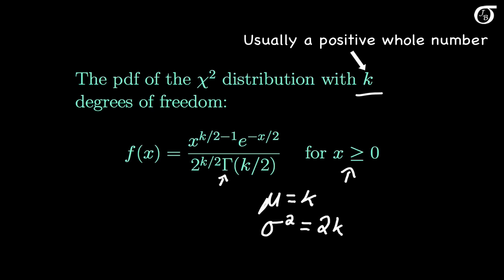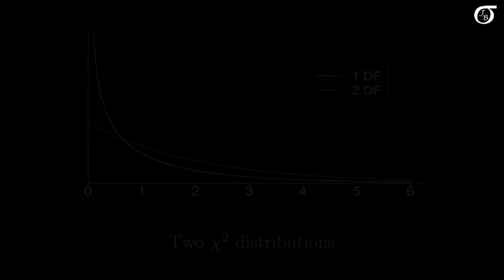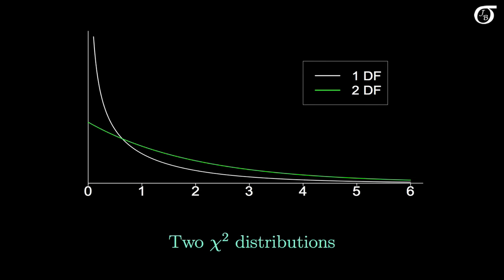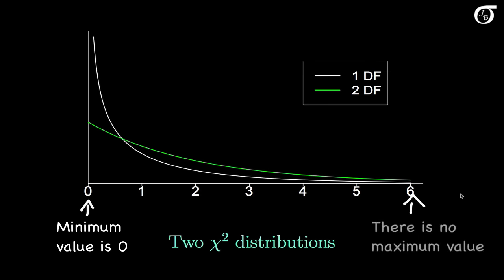Let's see what this PDF looks like in a plot. I'm going to split this up and look at one plot where the degrees of freedom are 1 and 2, and a different plot for larger degrees of freedom because the shape is a little bit different in those situations. Here the white curve is a chi-square distribution with 1 degree of freedom, and the green curve is a chi-square distribution with 2 degrees of freedom. Note that the minimum value a chi-square random variable can take on is 0, and it can take on any non-negative value. I've truncated the plot here at 6, but the values do go off to infinity.